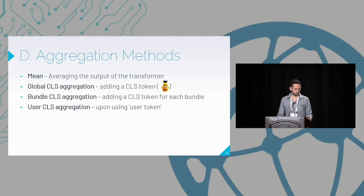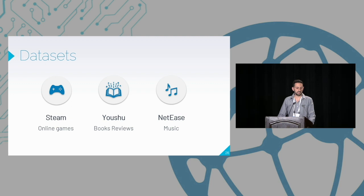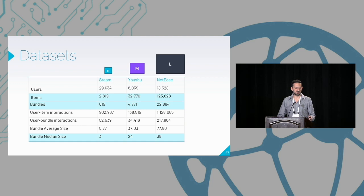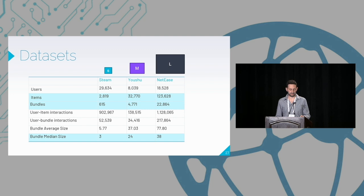We experiment on three different datasets: STEAM, Yushu, and Netis, which differ in domain as well as statistical characteristics. STEAM is the smallest and Netis is the largest. They vary in number of bundles, average bundle size, and average number of interactions.